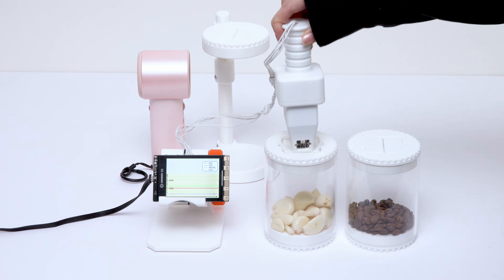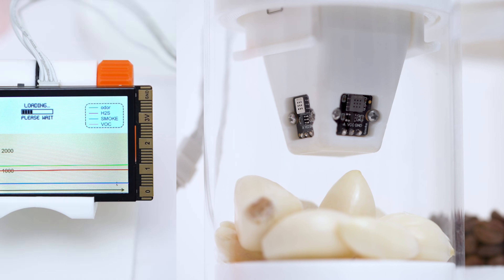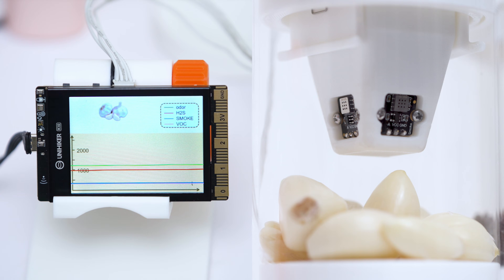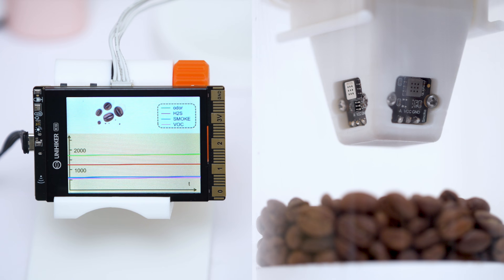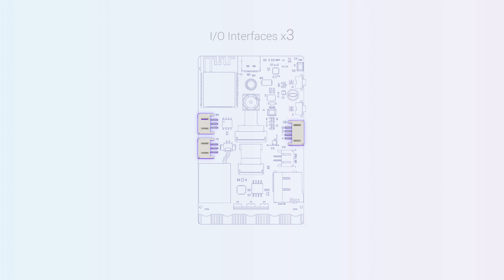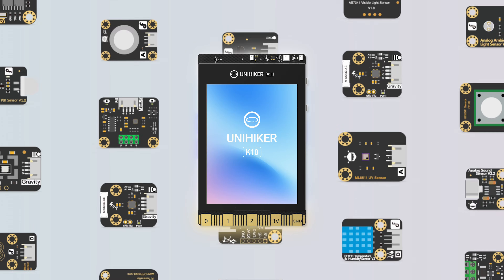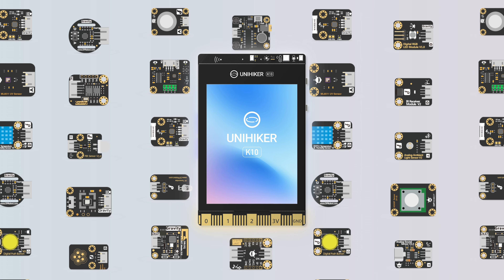Even better, by connecting gas sensors, you can create an electronic nose capable of distinguishing the scent of coffee beans and garlic. The integrated gravity interfaces allow rich data sources for more model training.